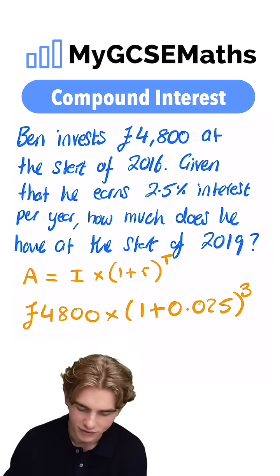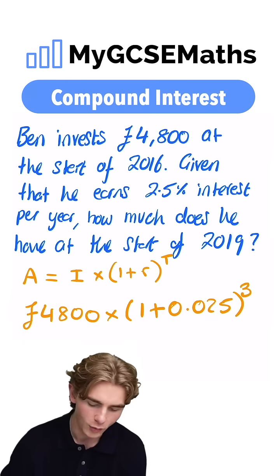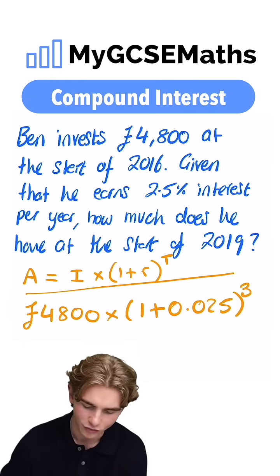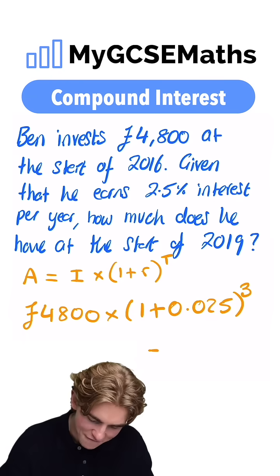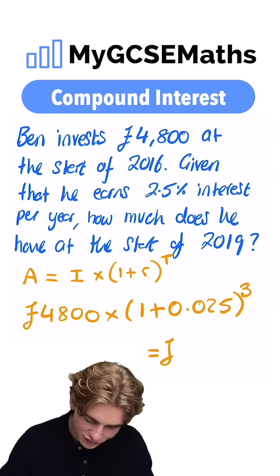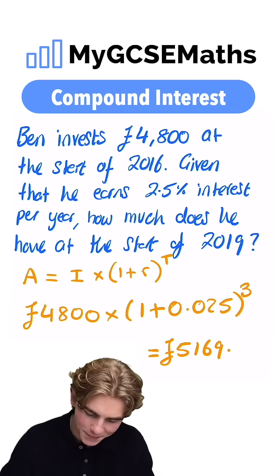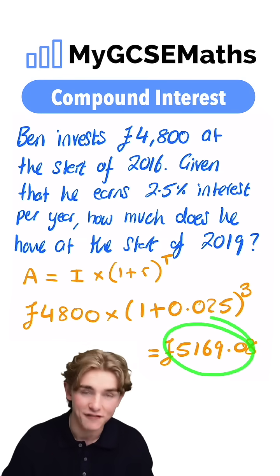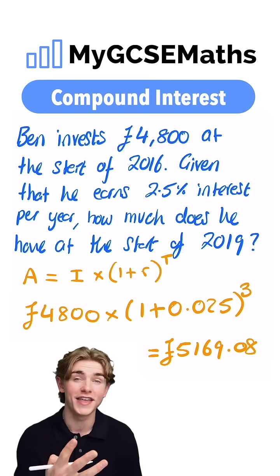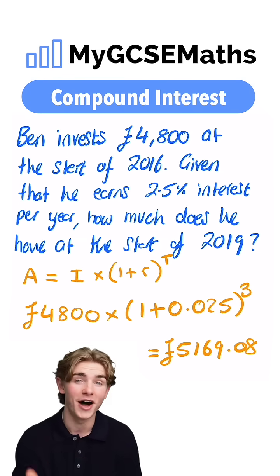It's going to be three years, so we can plug this into our calculator. That gives us £5,169.08 — that is how much we have after those three years have gone by.